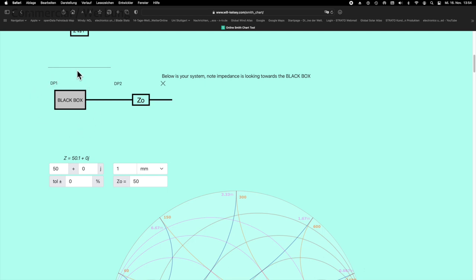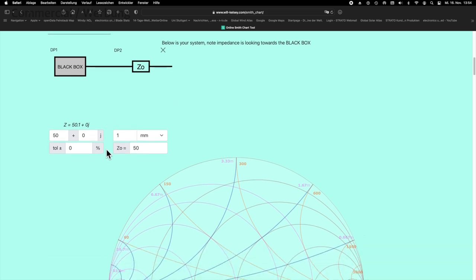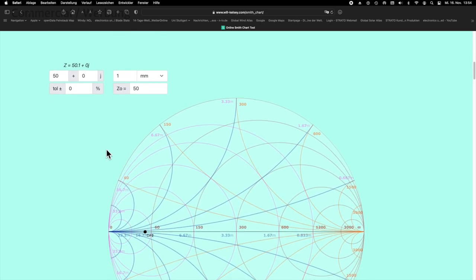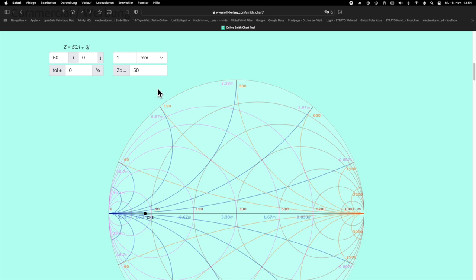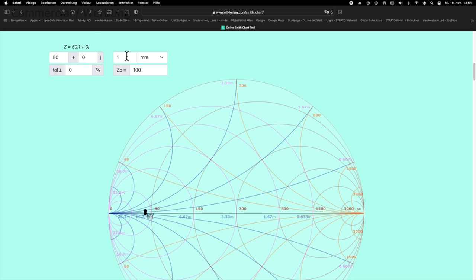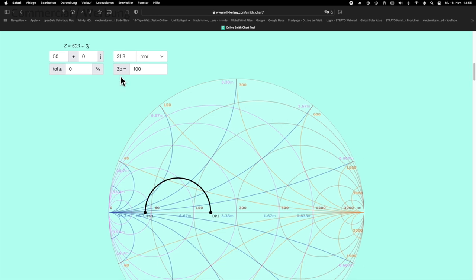So now we see a black box here, which could be our transmitter, with the connected piece of waveguide, for which we can now enter the characteristic impedance and the length. We insert 100 ohms and the length of 31.3 mm, which corresponds to a quarter of the wavelength at our frequency.